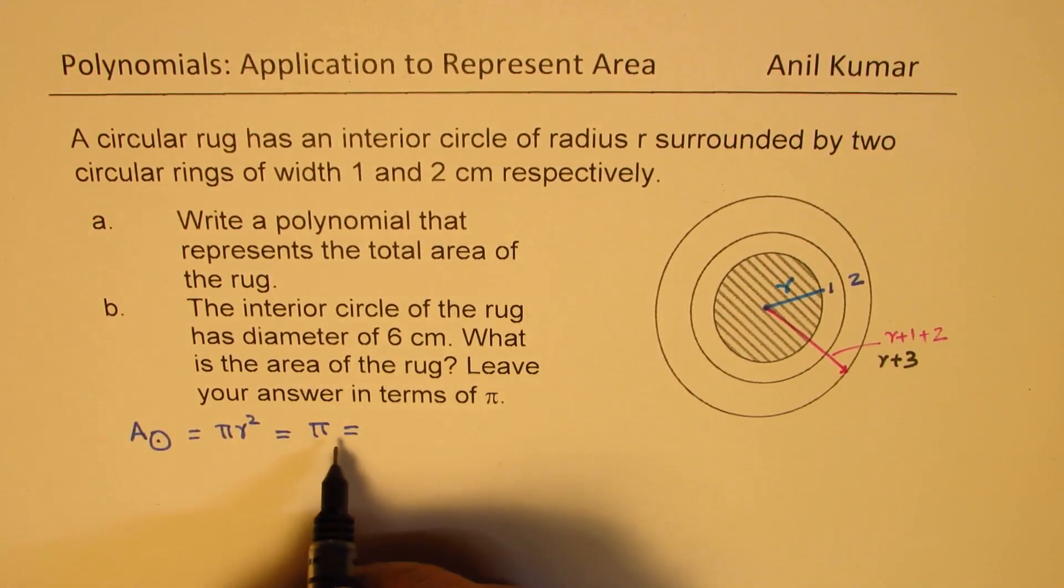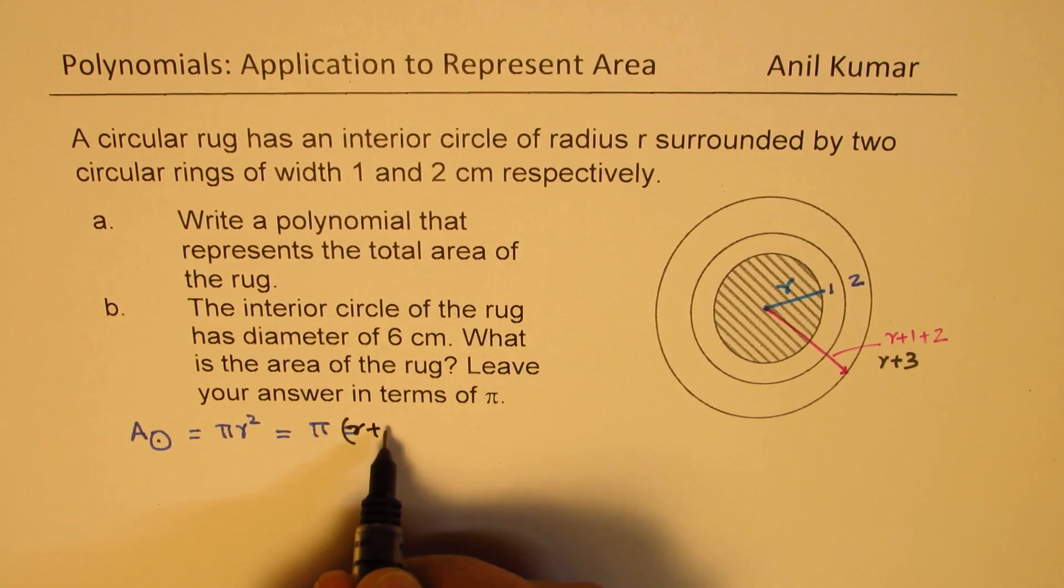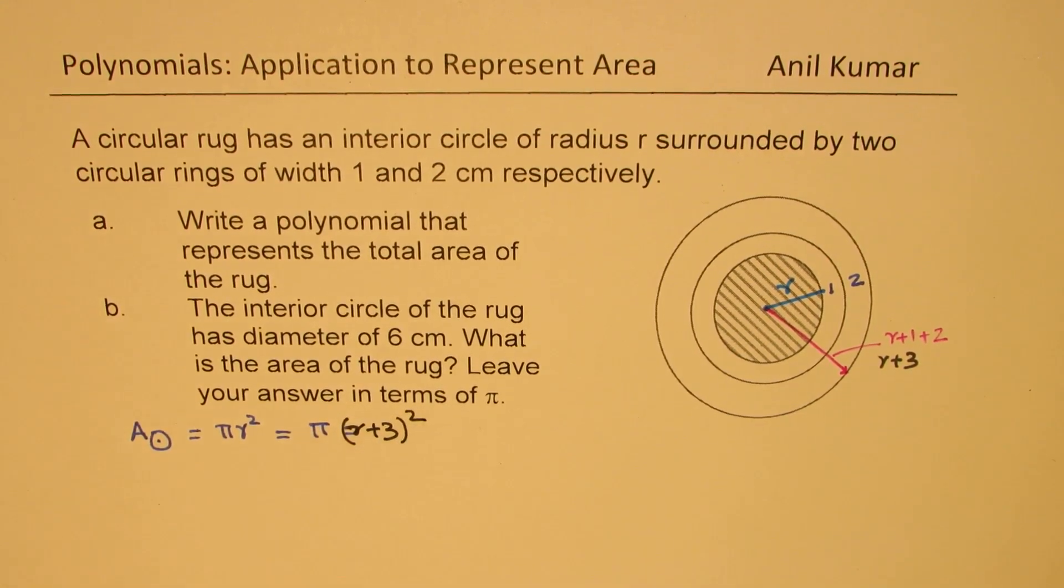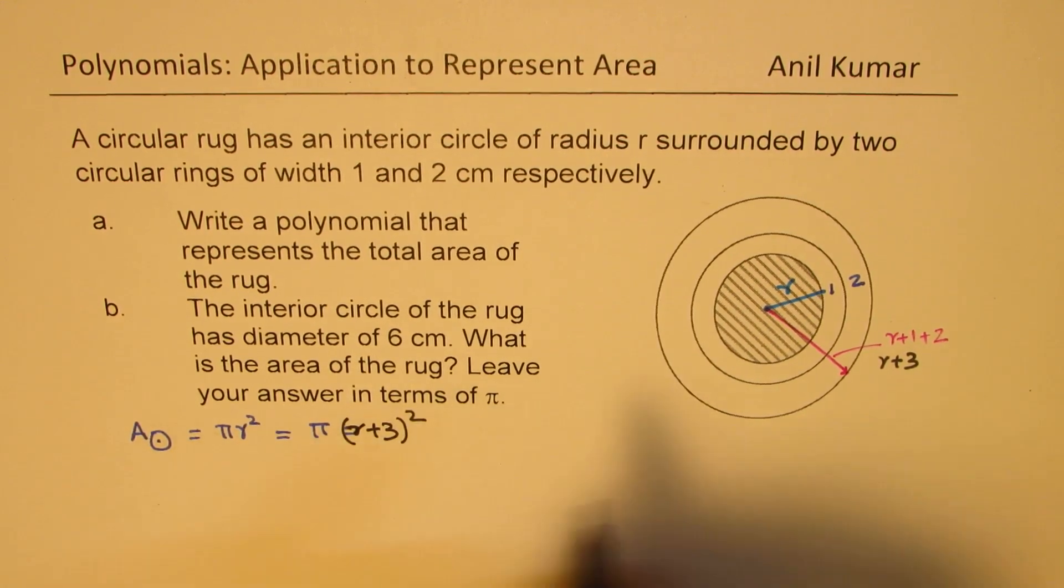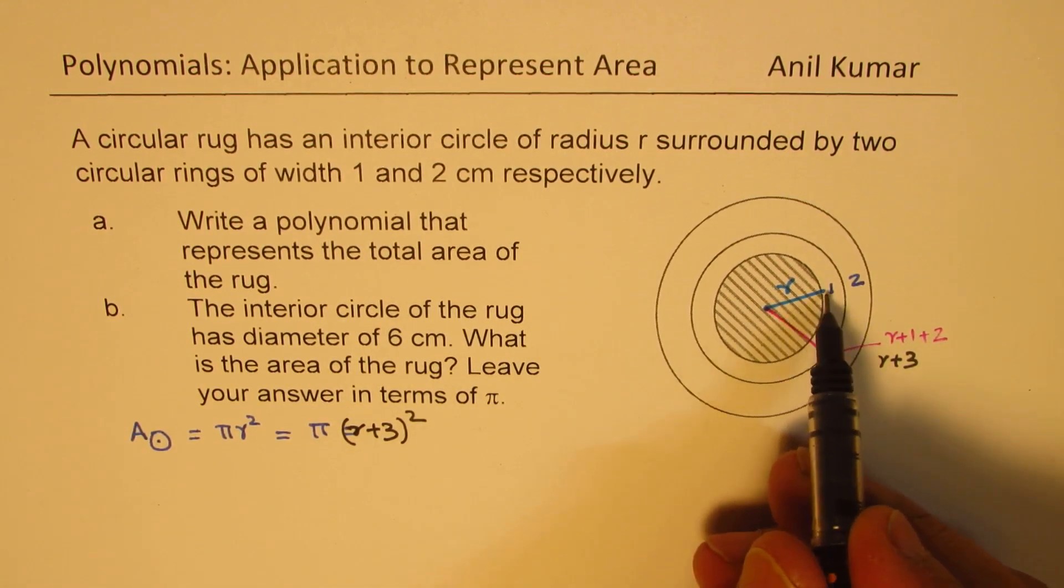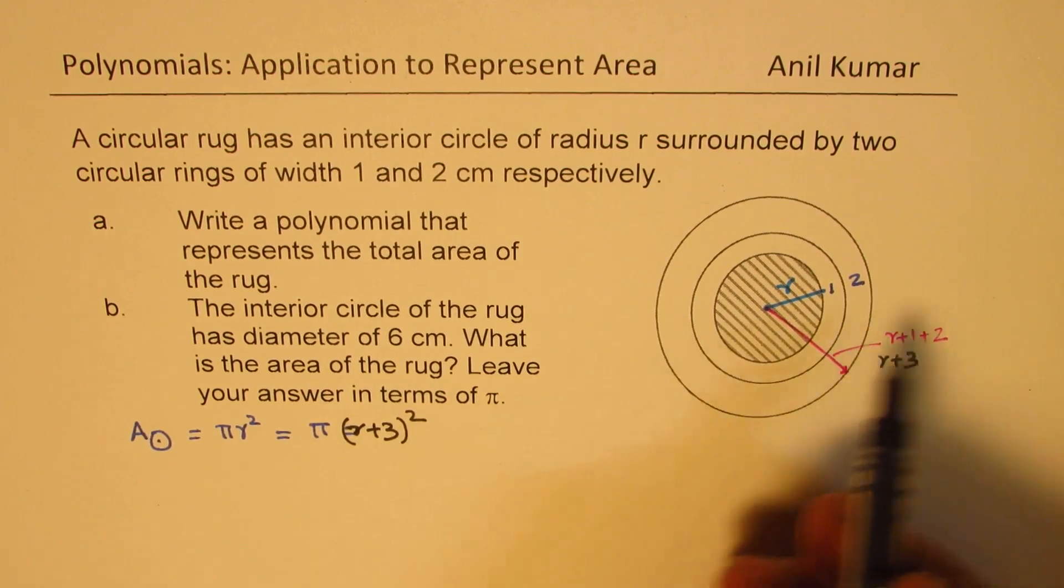So we'll write this as area equals π(r+3)². Is that clear? So the radius in the formula is basically we have to add these two, 1 plus 2.